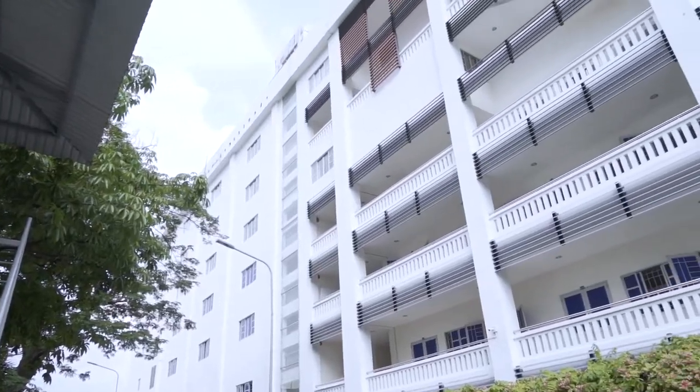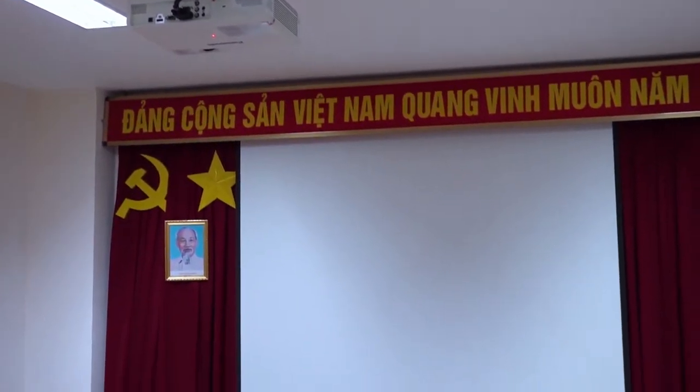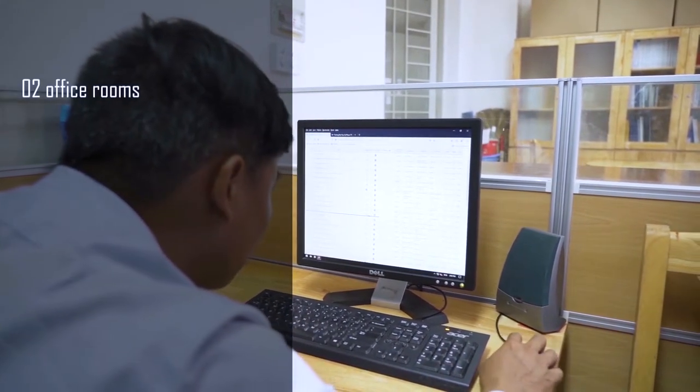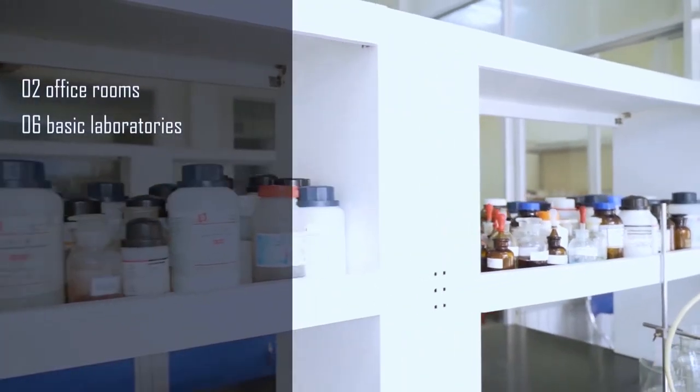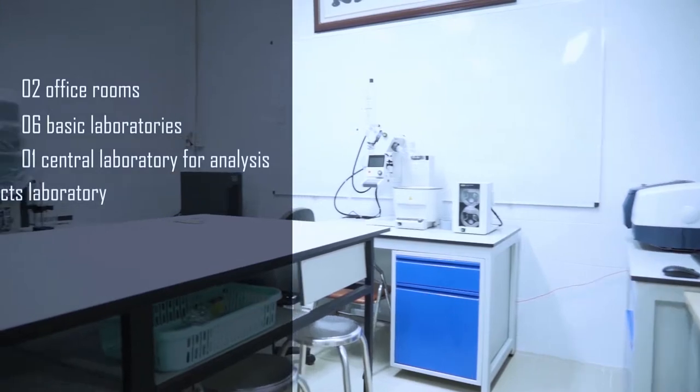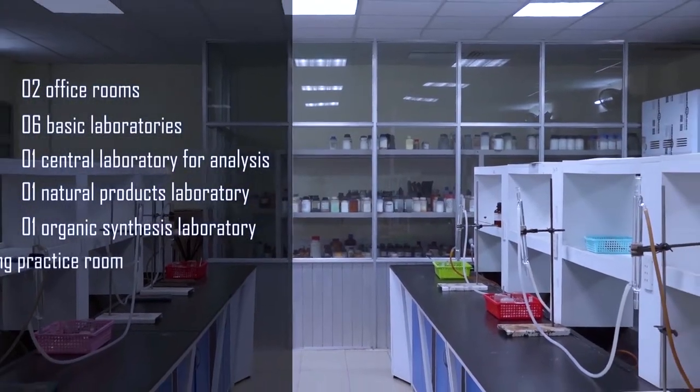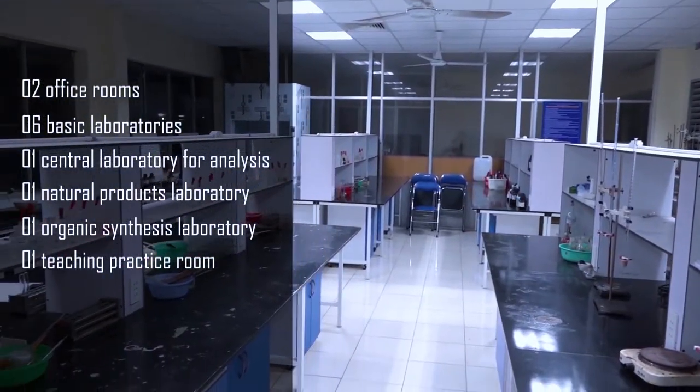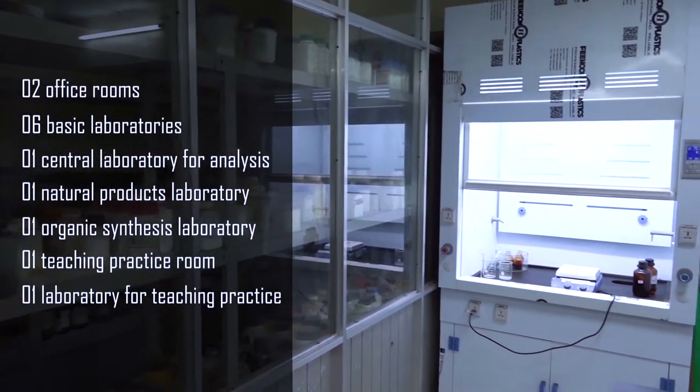There are two rooms for administration, which are located on the fifth floor of Block B, including one office room and a room for the management board. The system of laboratories includes six basic ones, one central laboratory for analysis, one natural product laboratory, one organic synthesis laboratory, and one laboratory for teaching practice located at Block M. There is one teaching practice room, which is also located at Block M.